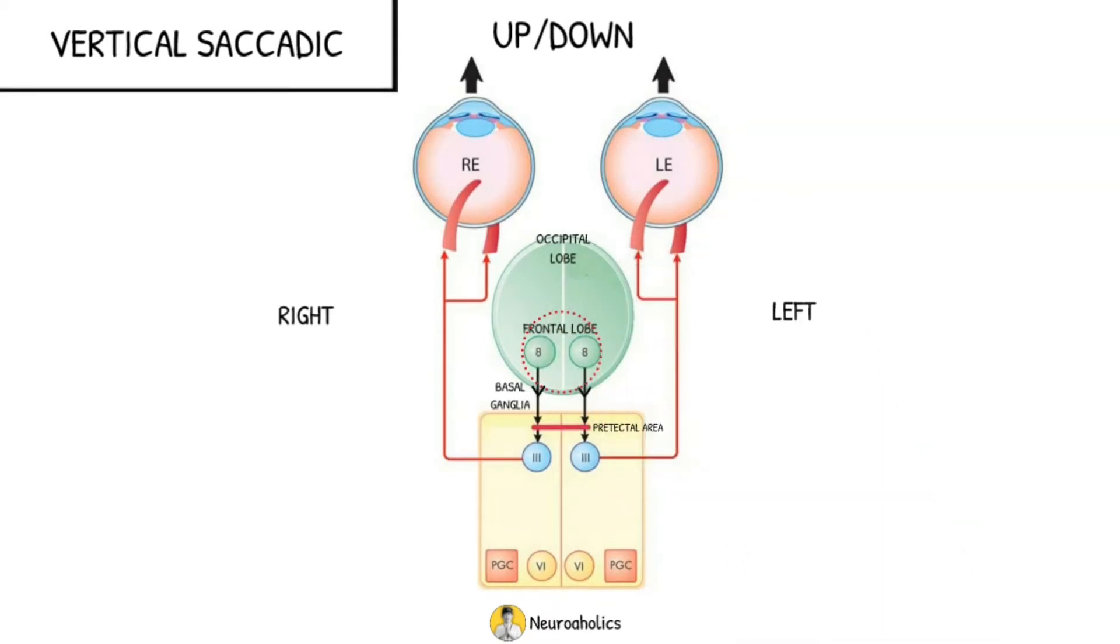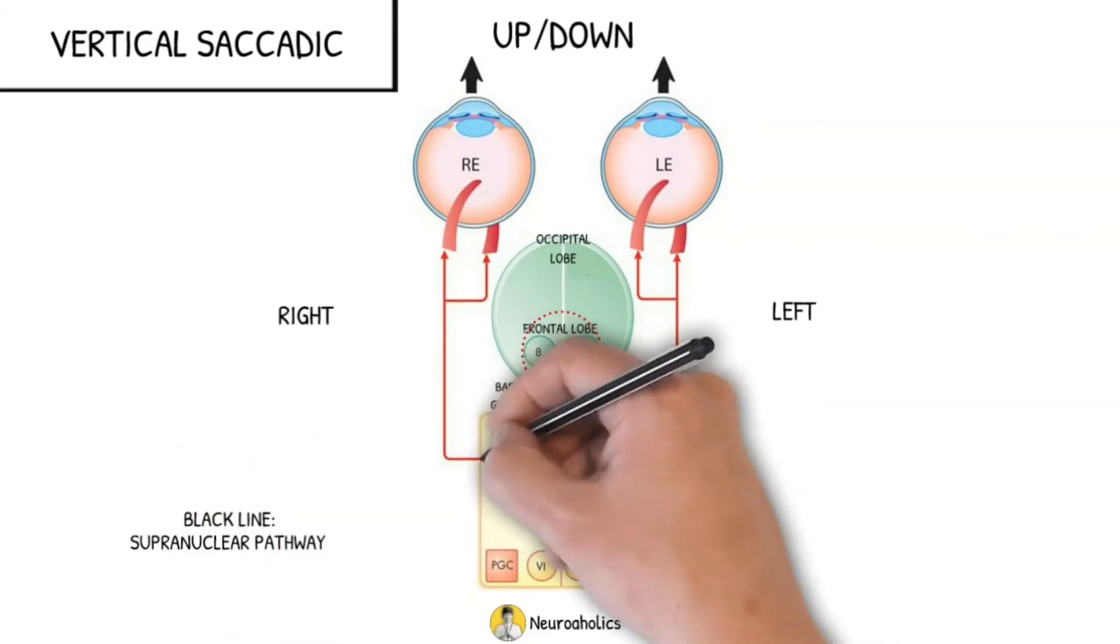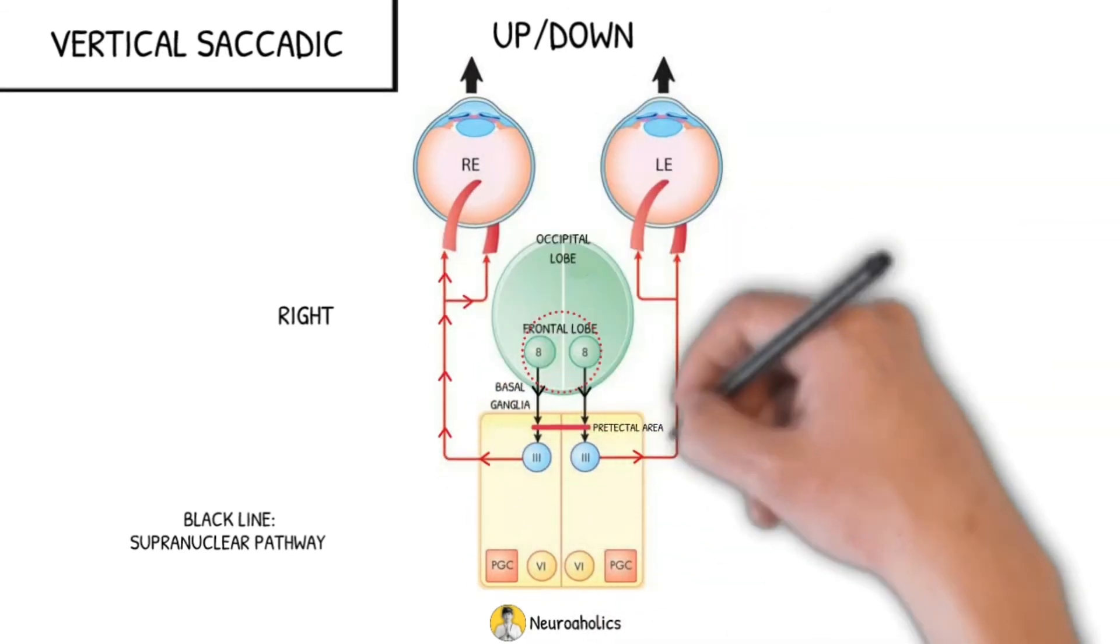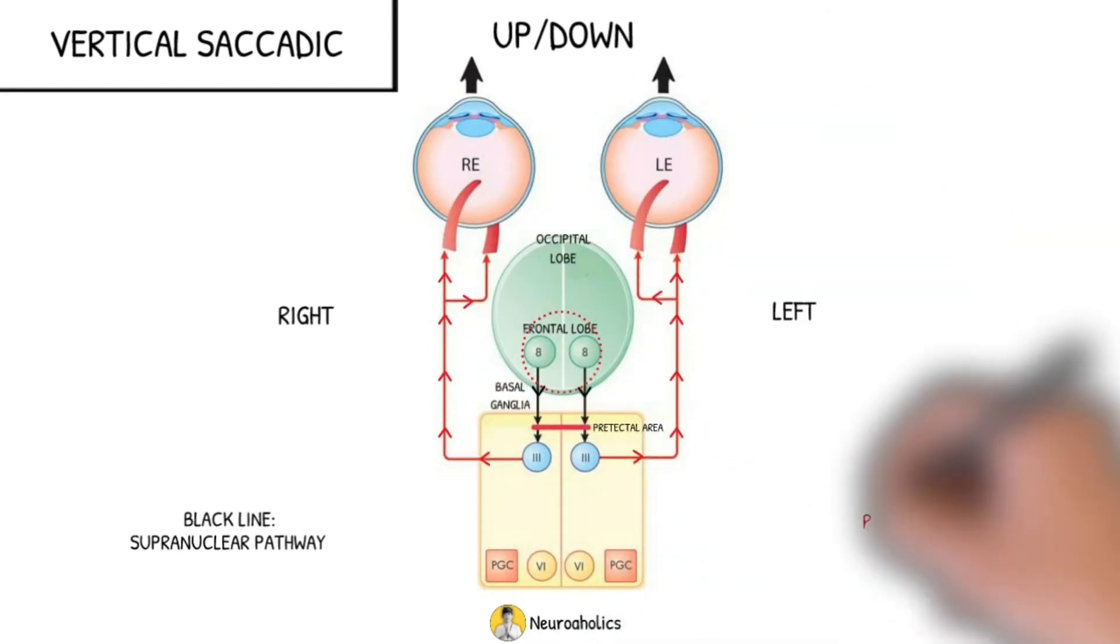From the vertical gaze center, impulses pass to the third nerve nuclei. Till here is the supranuclear pathway. Now the infranuclear pathway starts, and impulses go via the third cranial nerve to the vertical muscles, and the patient looks up or looks down.